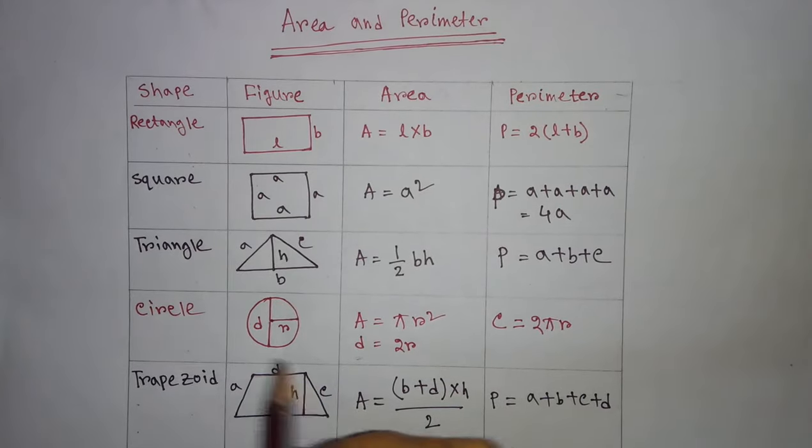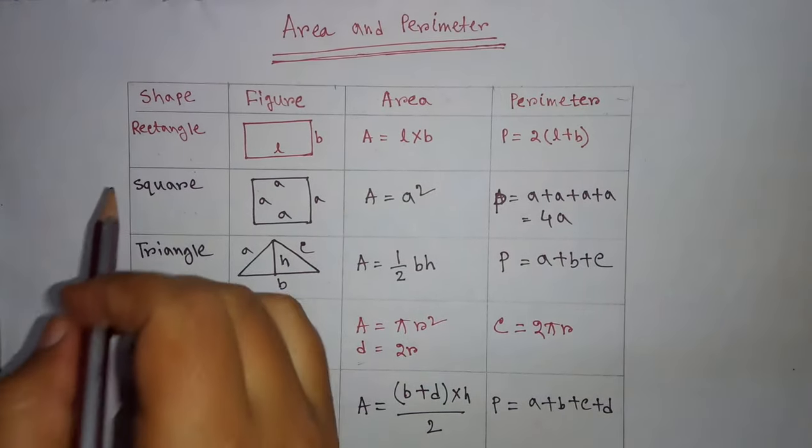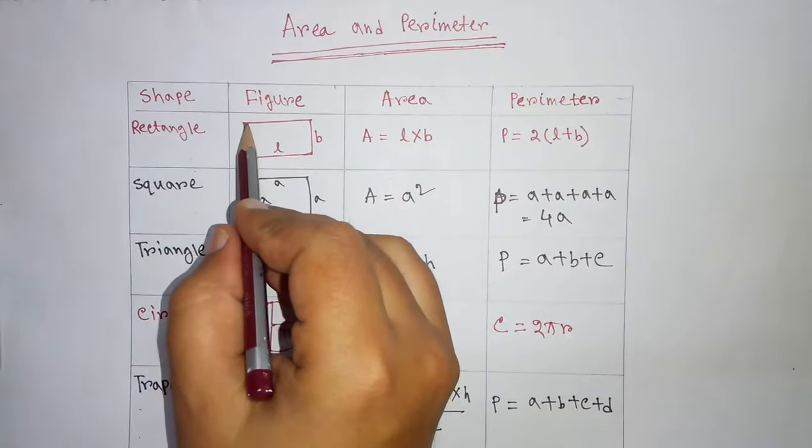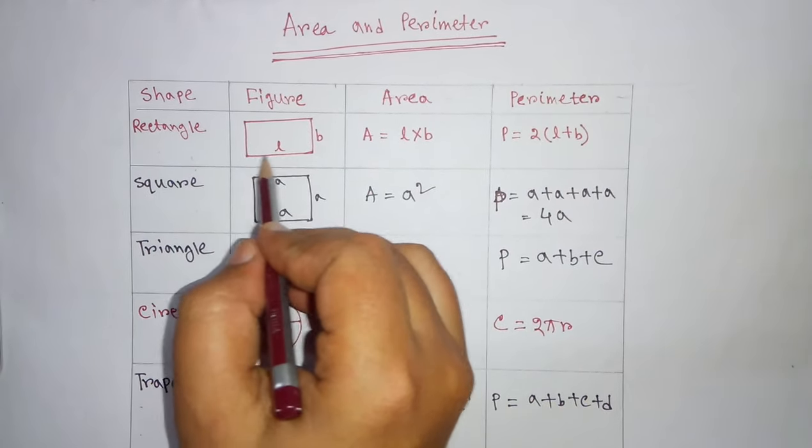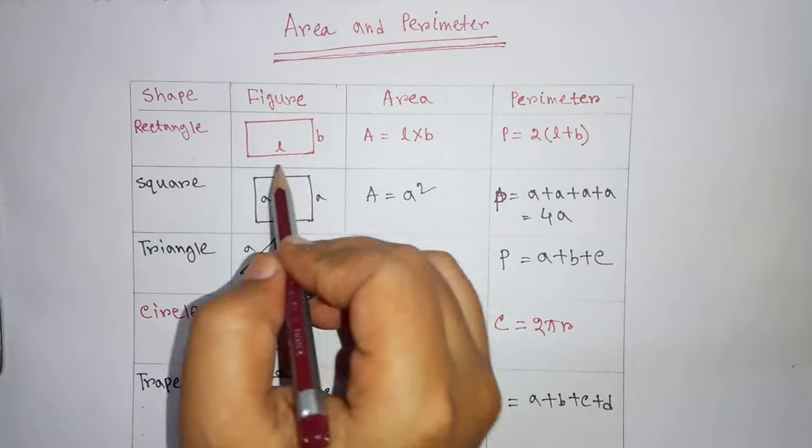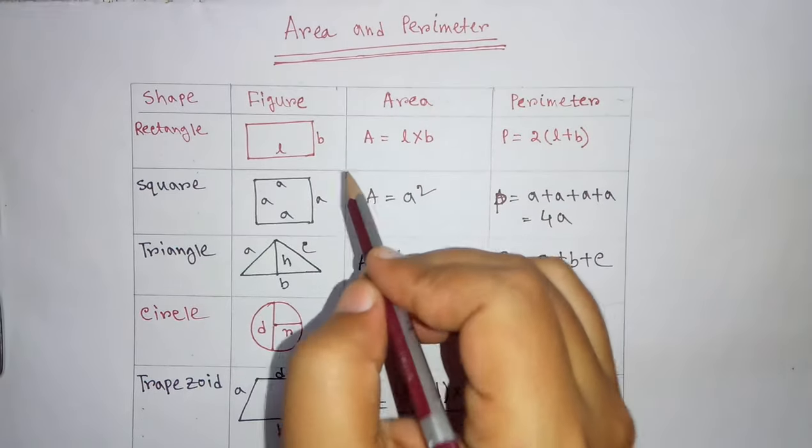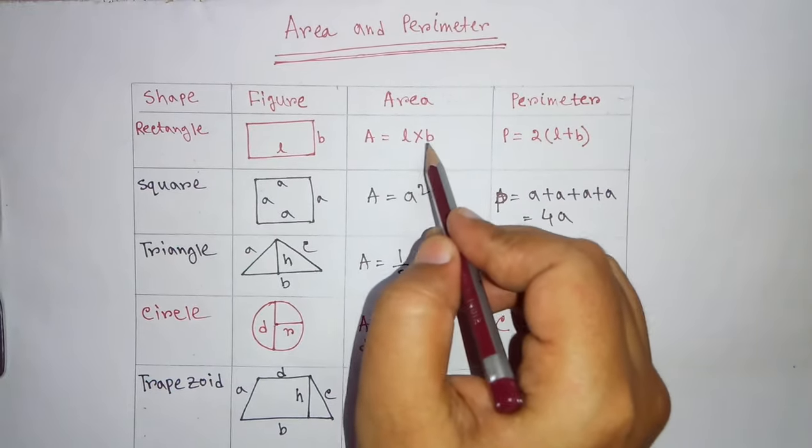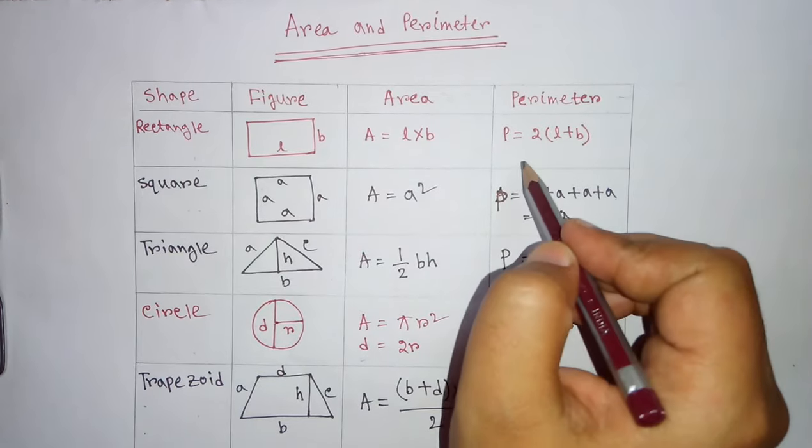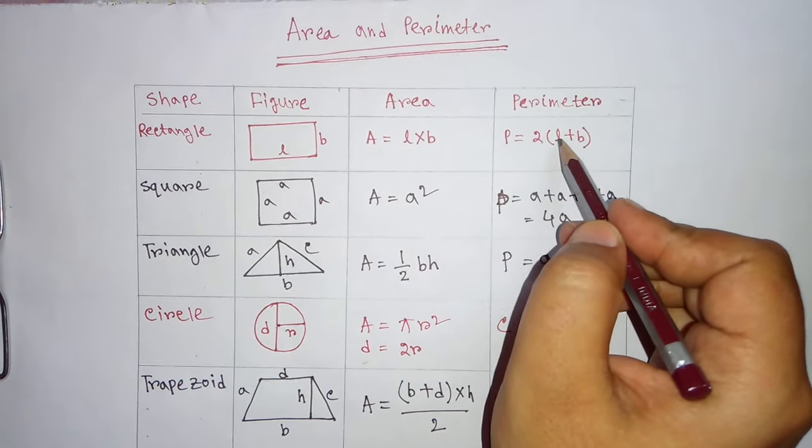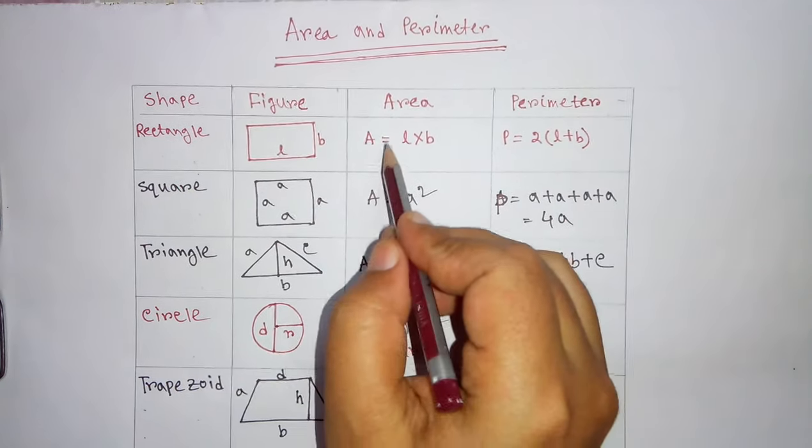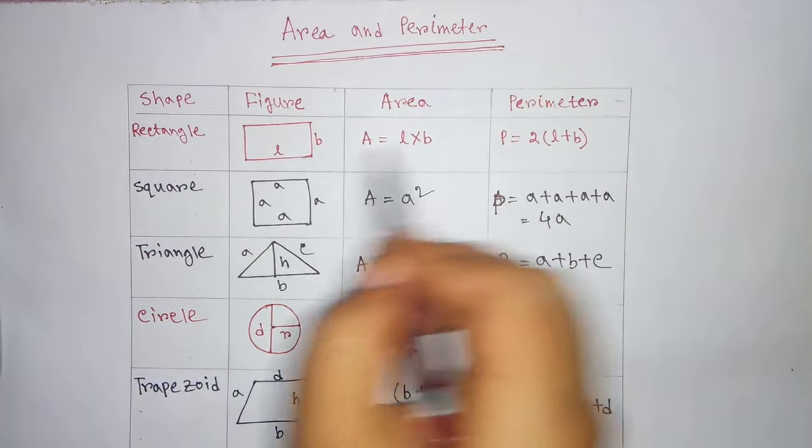So, let's start with the rectangle. What is rectangle? Rectangle is having four sides. We can call it as length and we can call it as breadth. So, for a rectangle what is the formula for area is length multiplied by breadth. And the perimeter formula is 2 into L plus B. That means 2 into length plus B. This is the formula for area and perimeter for rectangle.